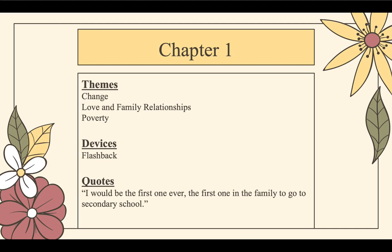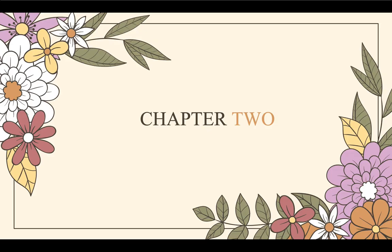Some themes we notice here are change — the chapter begins with a journey, she is moving out of Suklal Trace, so we know something is going to happen in her life. We have love and family relationships, specifically the relationship between the daughter and the father, although it does not seem strong at all. We also have poverty — as they are driving out, it is clear that the people in that neighborhood are not wealthy. Devices: we have flashback. One notable quote from this chapter is: 'I would be the first one ever, the first one in the family to go to secondary school.'